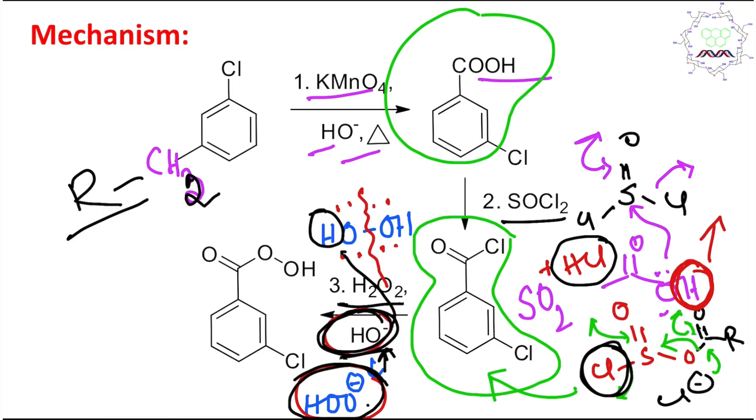In this case the reaction is acyl nucleophilic substitution type reaction, so it will open up, it will come back, Cl- leaves, and ultimately this peracid is produced.